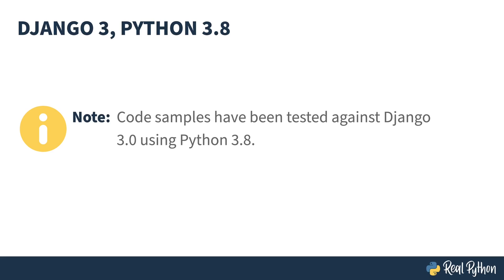If you use anything earlier than Django 2, you will run into problems in that the URL pathing structure changed between late versions of Django 1 and Django 2. Almost all of the code examples shown throughout here are found inside of a Django project called Redirector, which is available for download inside of the description. Feel free to download it and follow along as I talk about each section.